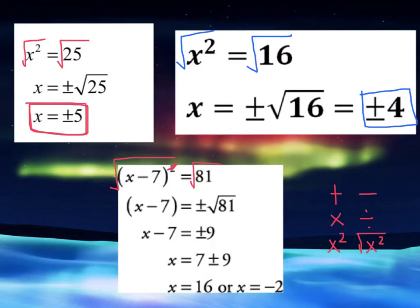x minus 7 would then equal plus or minus 9, because I'm going to simplify this side. And then I would add 7 to both sides and have x equals 7 plus or minus 9, and that could give me two solutions. 7 plus 9 would give me 16, and then 7 minus 9 would give me negative 2.